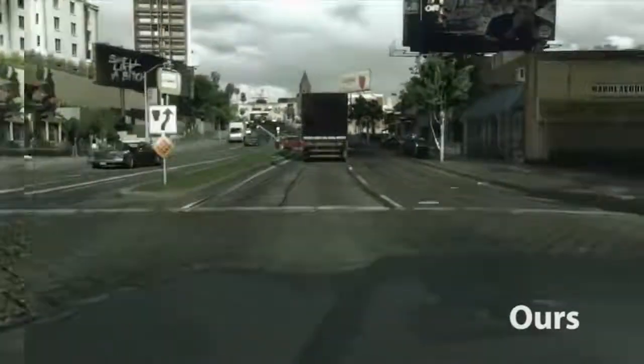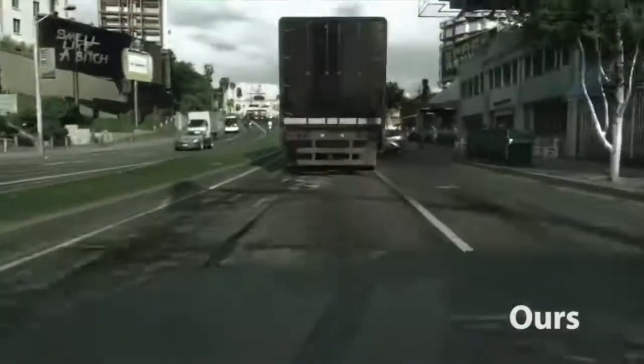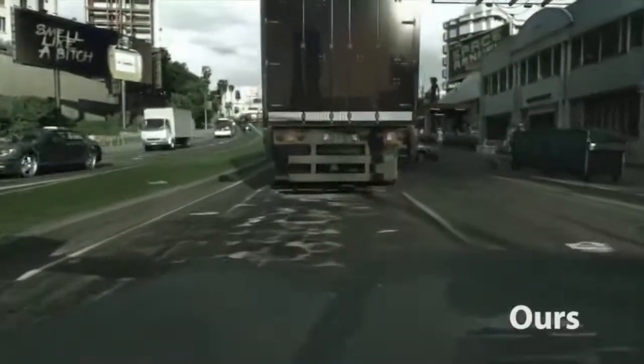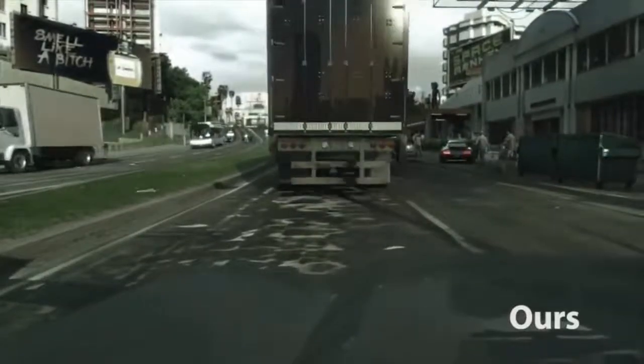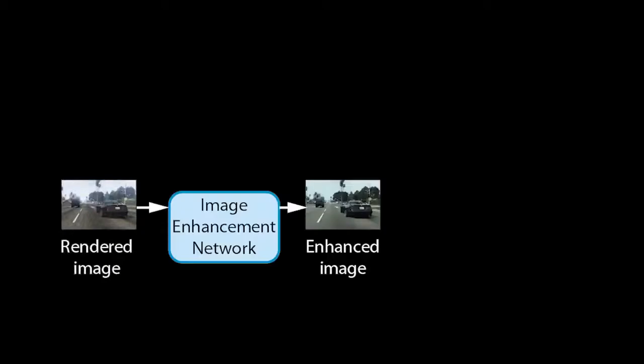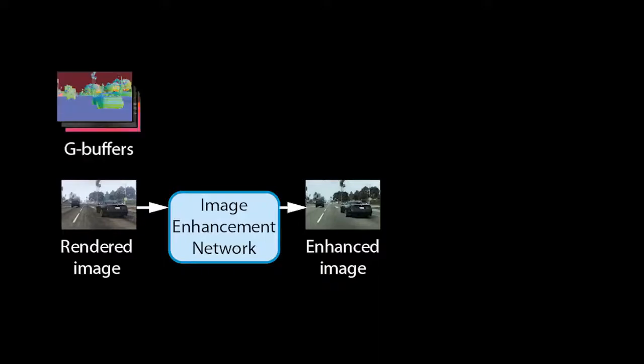Let us now look at our method in detail to understand why it is more stable and produces fewer artifacts. Our method takes a rendered image from the game and passes it through an image enhancement network to produce an enhanced image. We further extract a set of rendering buffers, called G-buffers, produced by the game engine.